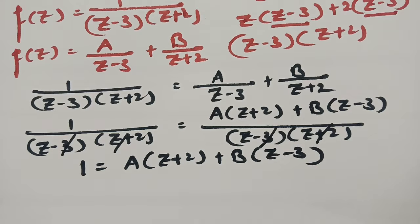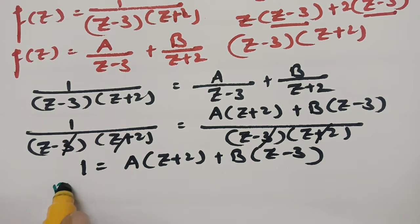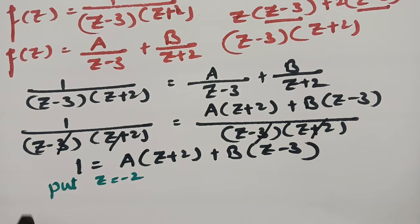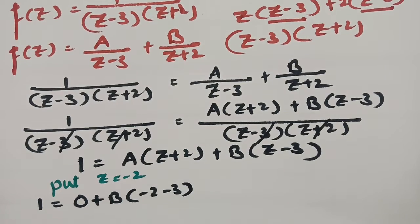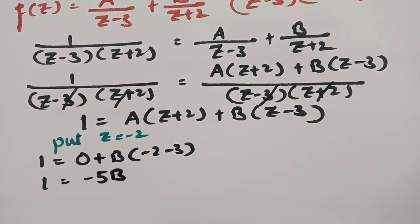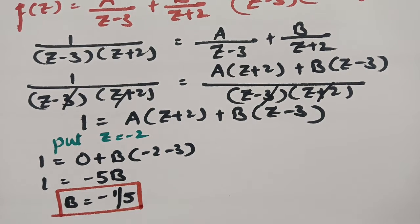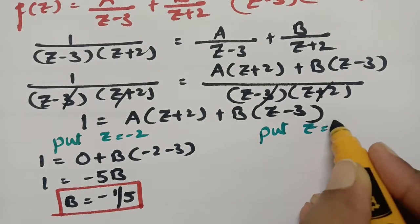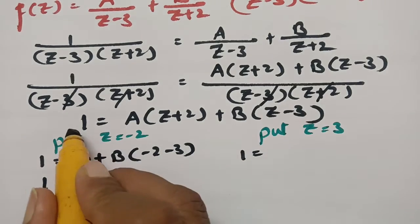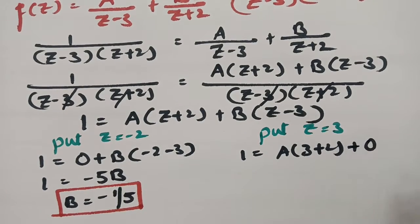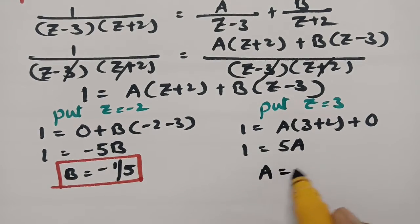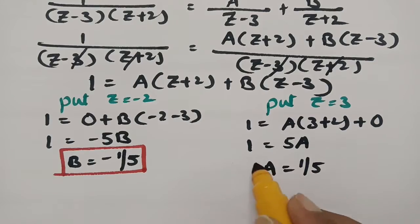I need the values of A and B. Put z = -2: the A term cancels to zero, giving 1 = B(-2 - 3) = -5B, so B = -1/5. Then put z = 3: 1 = A(3 + 2) = 5A, so A = 1/5. I now have both values: A = 1/5 and B = -1/5.